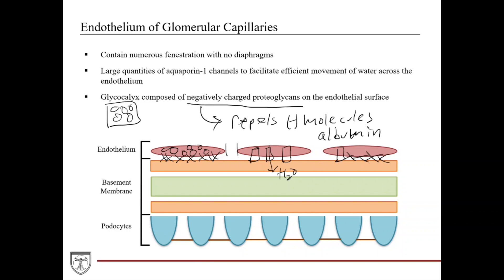If you do a urinalysis — collecting a patient's urine and analyzing it in the lab — and you see protein in the urine, that is a sign of kidney disease and damage to the filtration apparatus; it's a pathological finding. The filtration apparatus is designed to keep proteins out. Electrolytes, glucose, and amino acids — smaller molecules — do make their way through, and as we'll talk about, get reabsorbed over the course of the nephron.